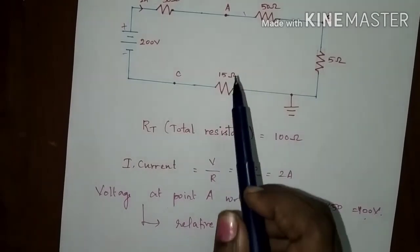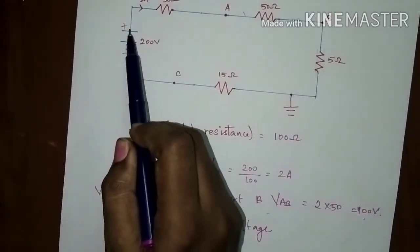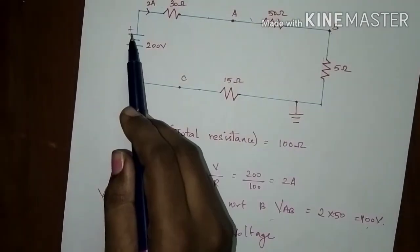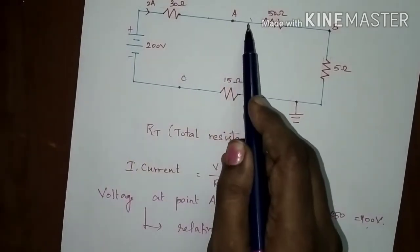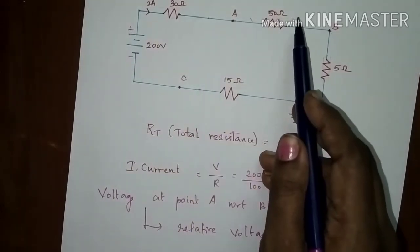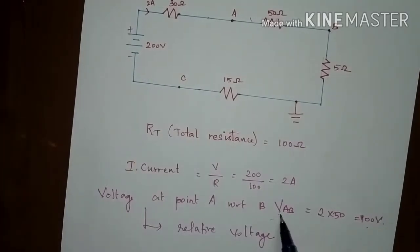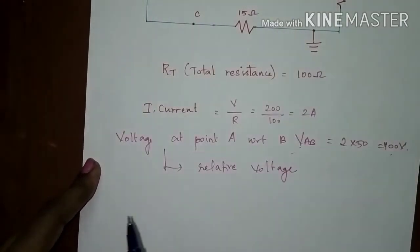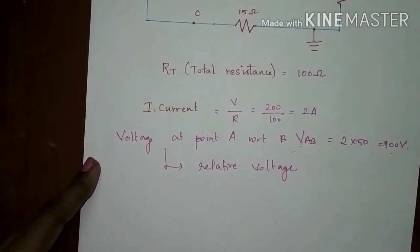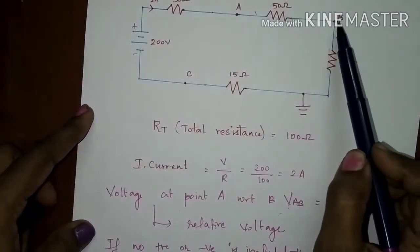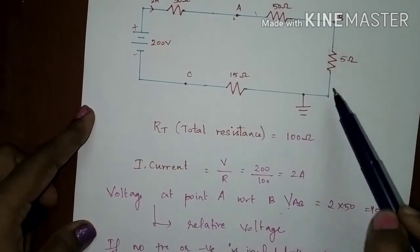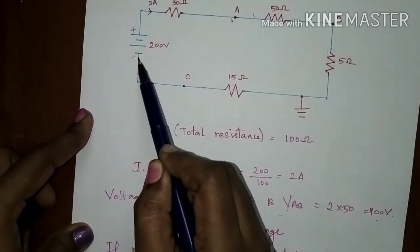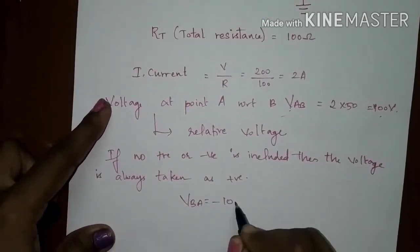It must be indicated whether the voltage at A with respect to B is closer to the positive terminal or negative terminal of the battery. Point A is nearer to the positive terminal compared to B, which is connected to the negative terminal. So VAB is positive — positive 100 volts. If no positive or negative sign is included, then the voltage is always taken as positive. If you find the voltage at B with reference to A, then VBA is negative. Since B is connected to the negative terminal, VBA equals minus 100 volts.